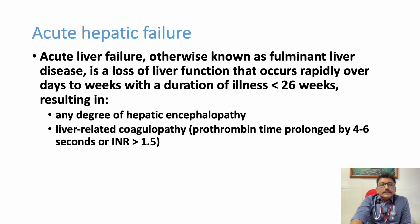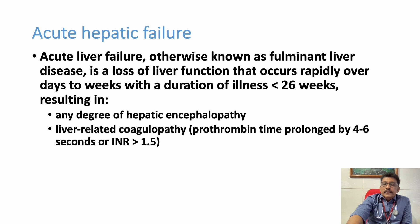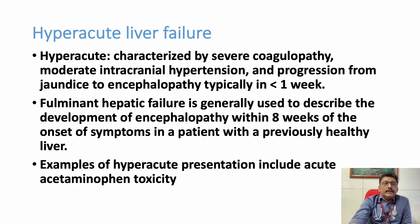So if the patient develops liver disease, hepatic encephalopathy, and liver function is altered — that is INR more than 1.5 or clinically significant bleeding due to coagulopathy — all occurring in less than 26 weeks, we can call it acute hepatic failure.